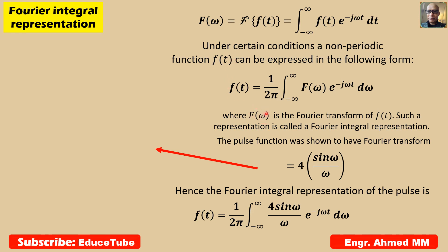Here, F(omega) is the Fourier transform of f(t). Already in the previous slide we found that 4 sine omega over omega was the Fourier transform, and such a representation is called Fourier integral representation.